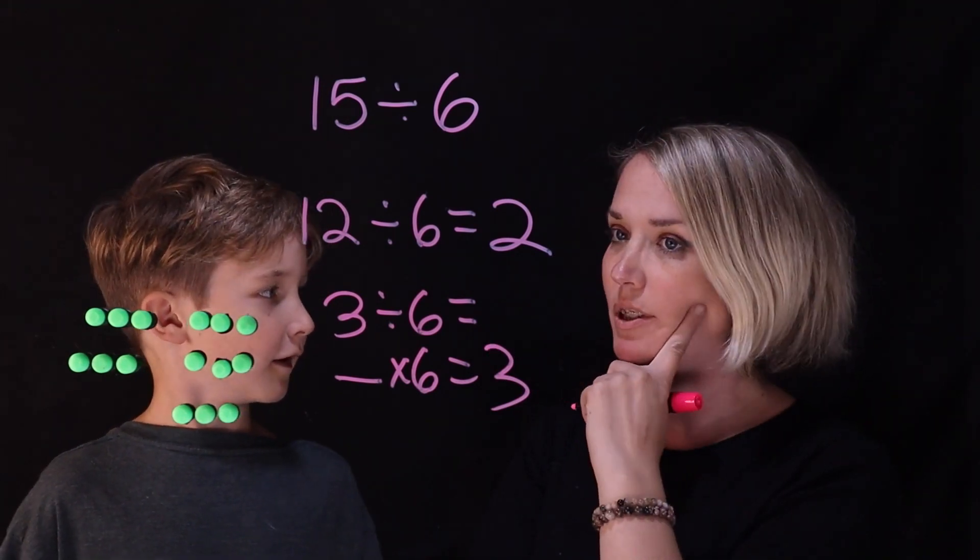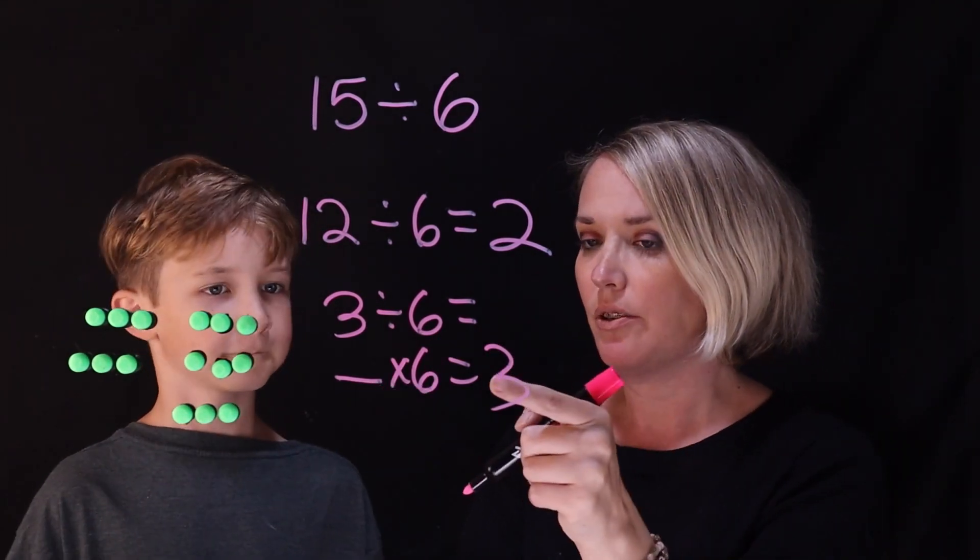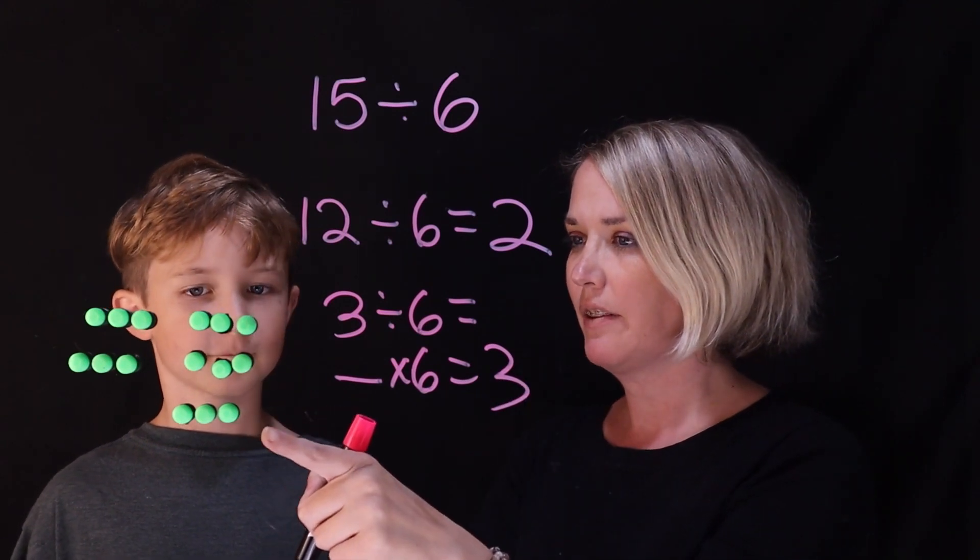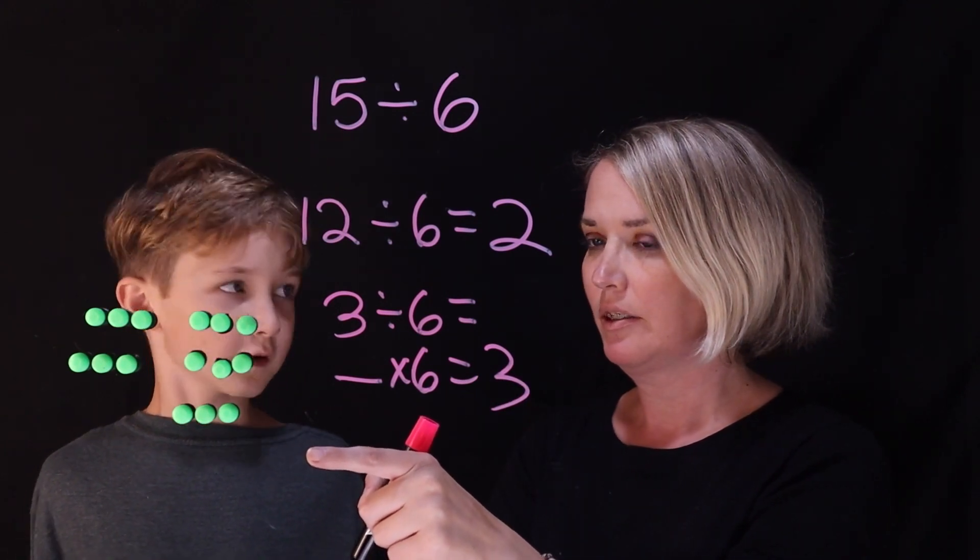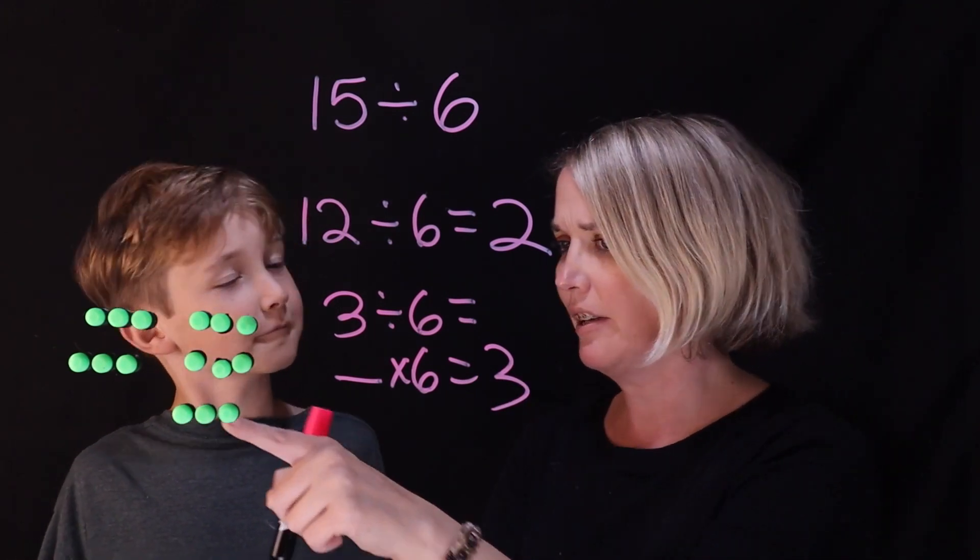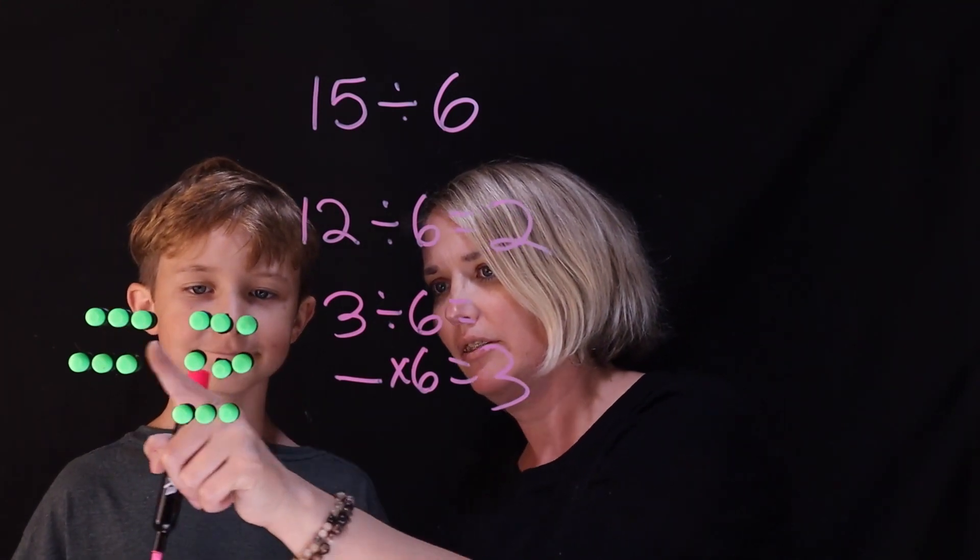Which one do you want to do? This one. Okay, what times 6 equals 3? 0.5. Or a half, right? And look, it's half. It's 6. Yeah.